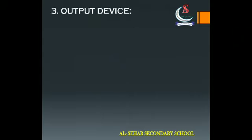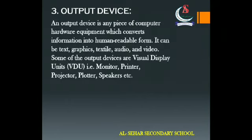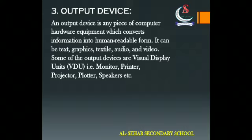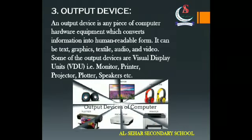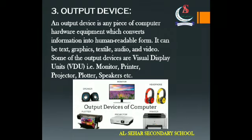3. Output Device: An output device is any piece of computer hardware equipment which converts information into human-readable form. It can be text, graphics, audio and video. Some of the output devices are visual display units. For example, Monitor, Printer, Projector, Plotter, Speaker, etc.